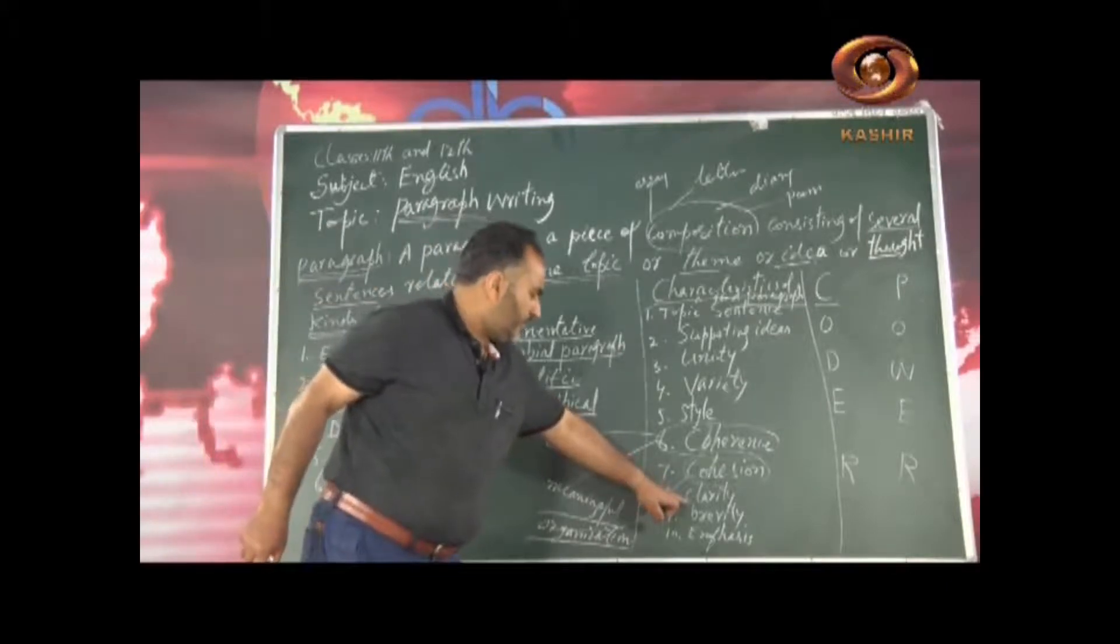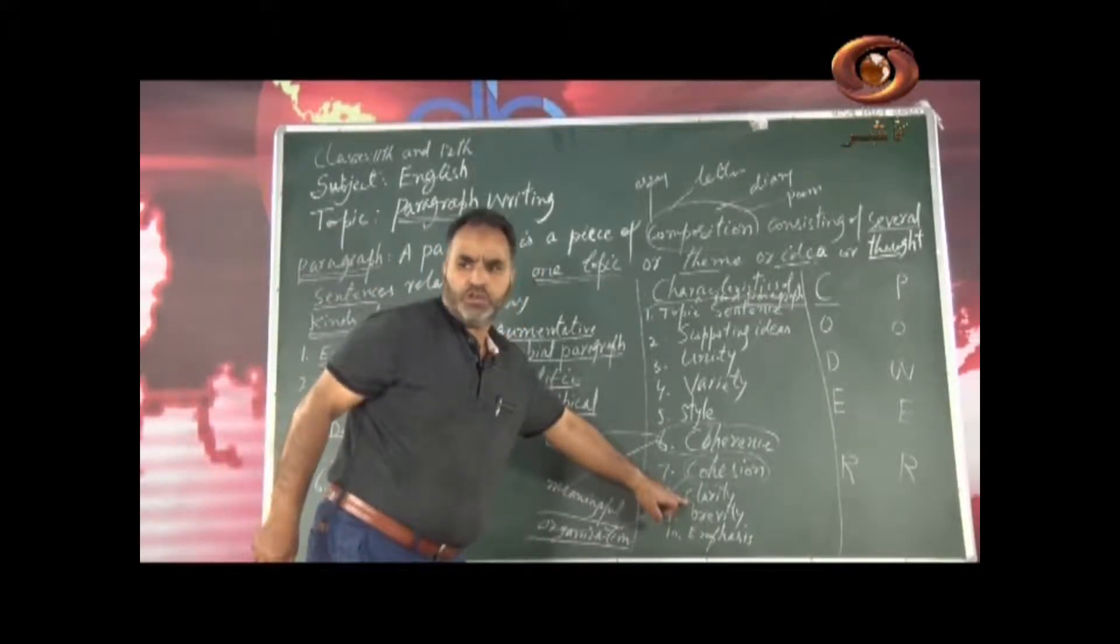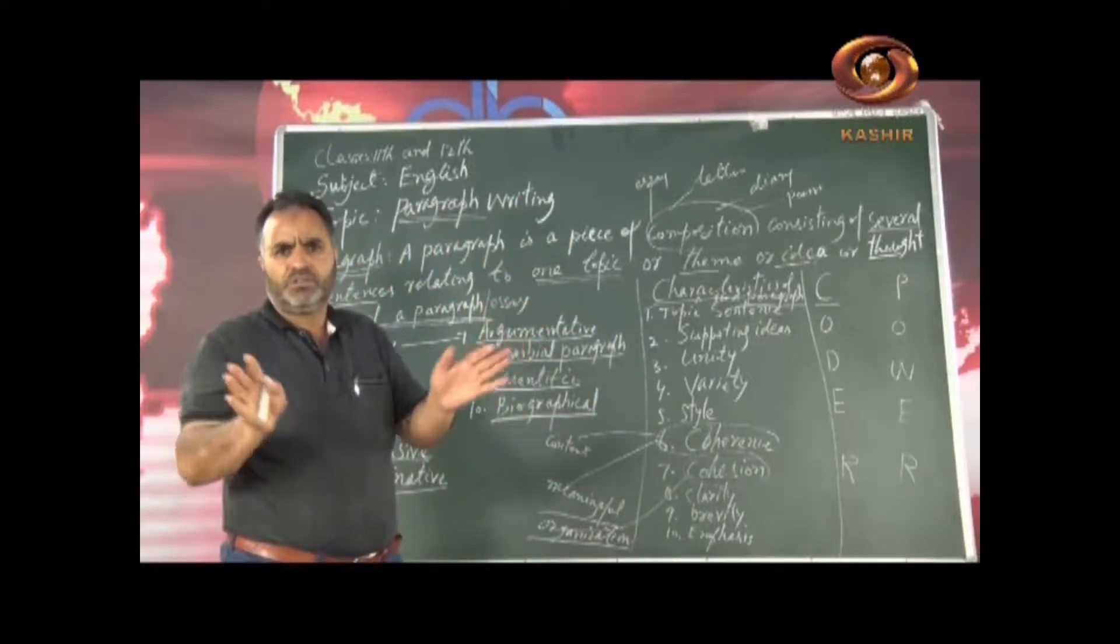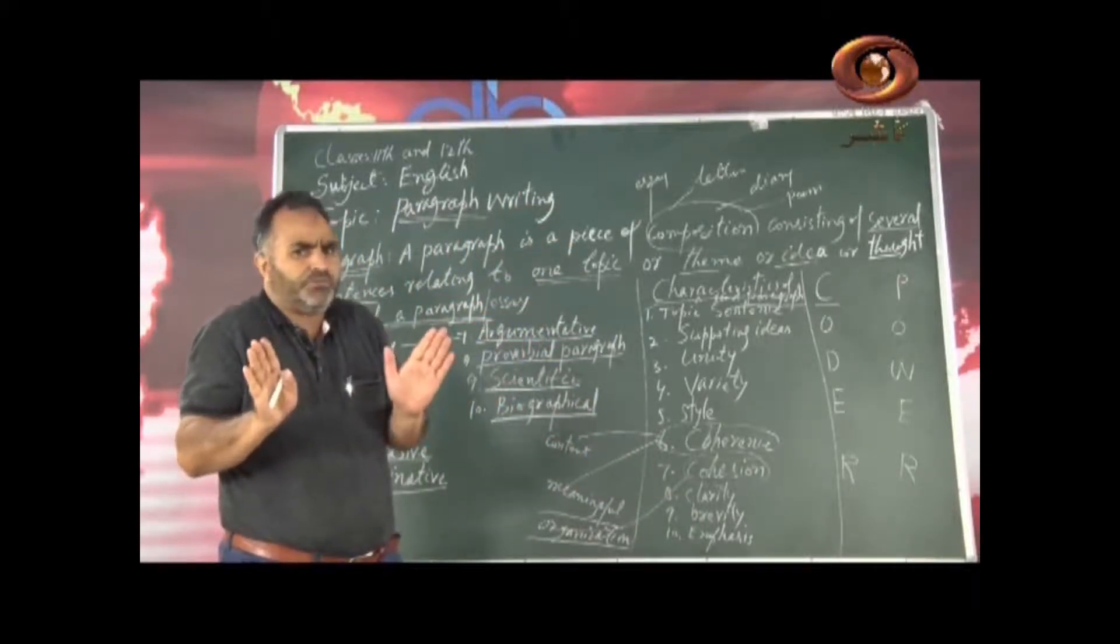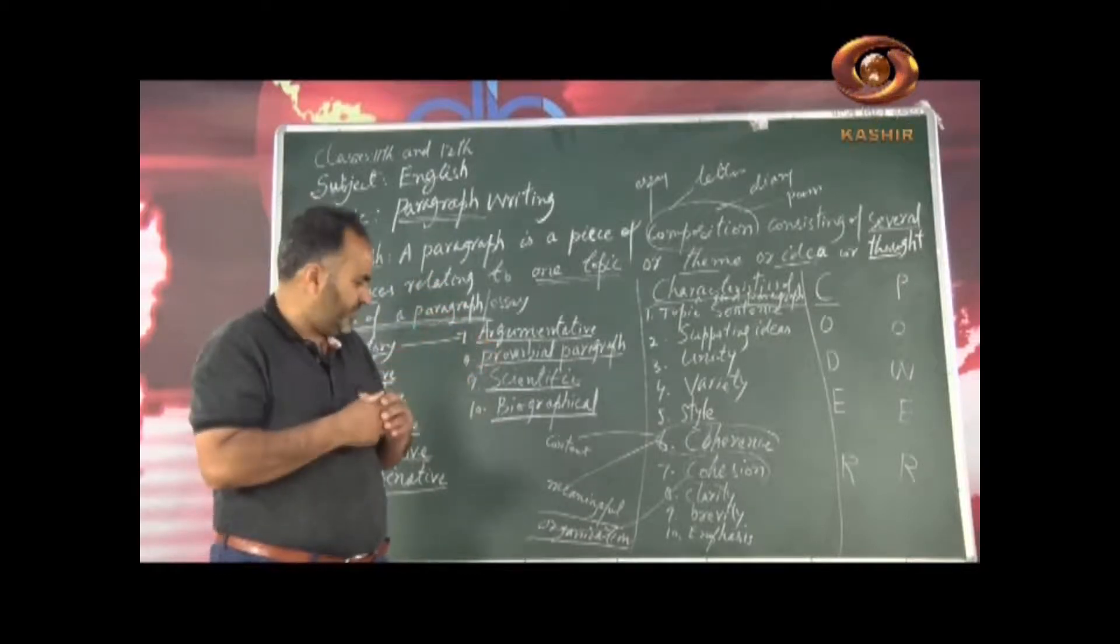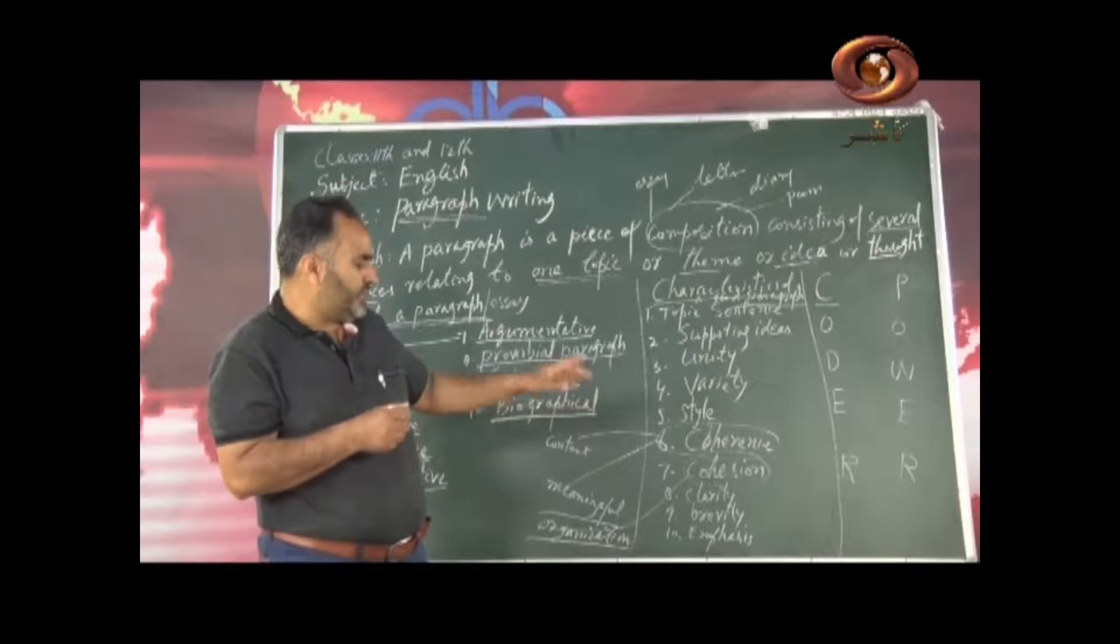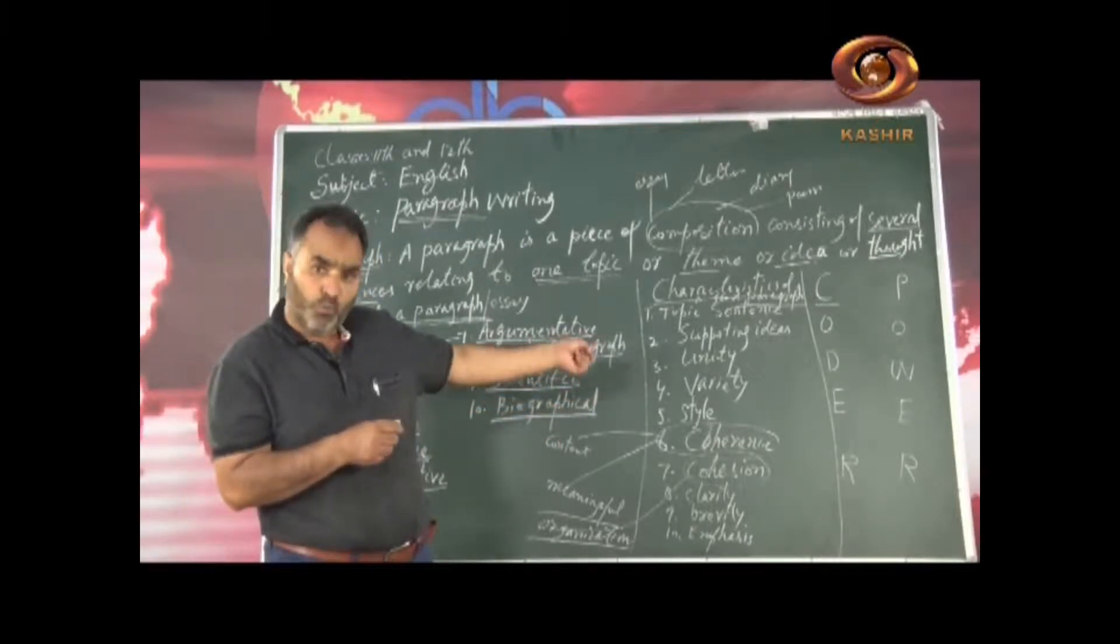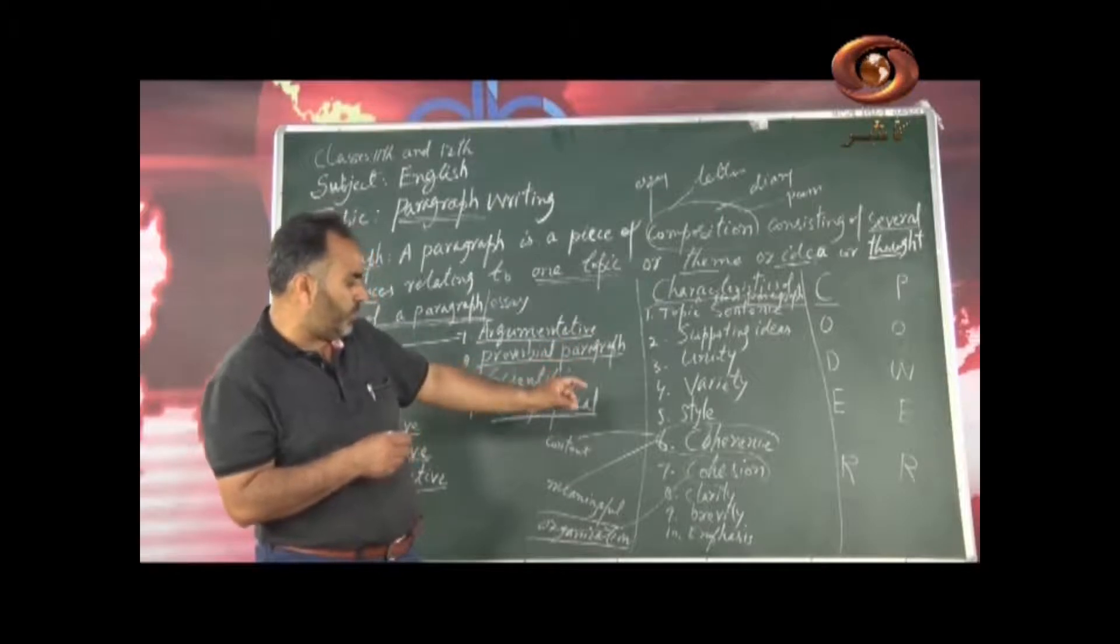And then next thing we should have in a paragraph is clarity. We should have clarity in a paragraph. That is everything expressed in a paragraph should be clear. Nothing should be ambiguous. We should not use those kind of words, bombastic words that the reader will not understand. Then brevity. Brevity, Shakespeare says that brevity is the soul of wit. So brevity is very important in a paragraph.